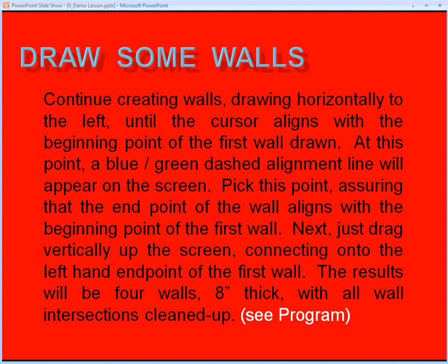At this point, a blue-green dashed alignment line will appear on the screen. Pick this point, assuring that the endpoint of the walls aligns with the beginning point of the first wall. Next, just draw vertically up the screen, connecting onto the left-hand endpoint of the first wall. The result will be four walls, eight inches thick, with all the wall intersections cleaned up.